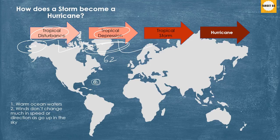A tropical depression becomes a tropical storm if its winds reach almost 63 km per hour. And a tropical storm becomes a hurricane if its winds reach almost 119 km per hour.